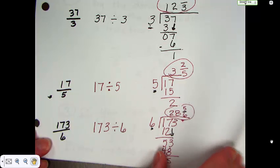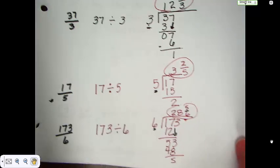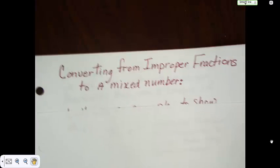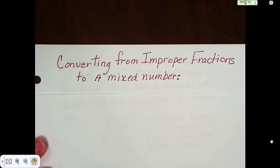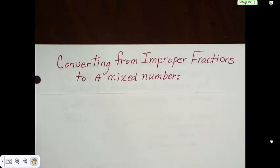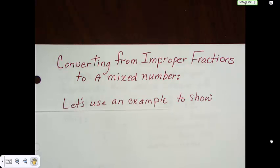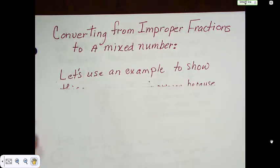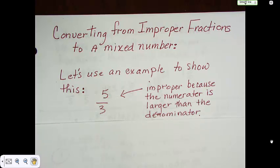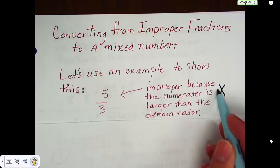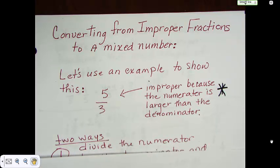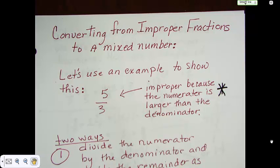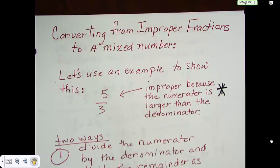So let's take a look at converting from improper fractions to a mixed number. We're just going to start with an improper fraction. Now, actually, to be honest with you, we just did that. Only we just called them division problems. But all fractions are division problems. So this is going to be reviewed, but I still want you to write it down. So let's just use examples to show how we're going to do this.